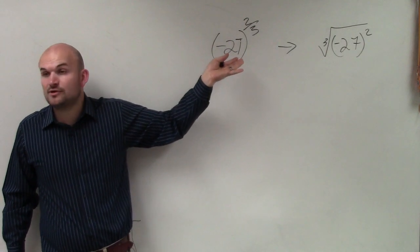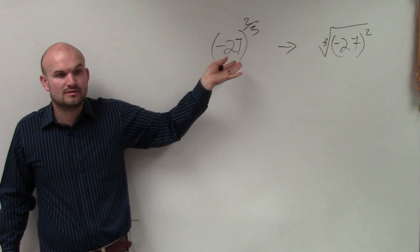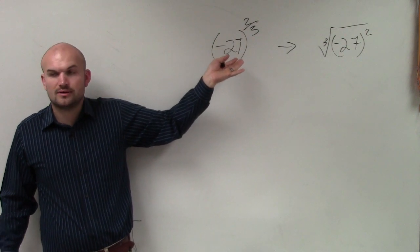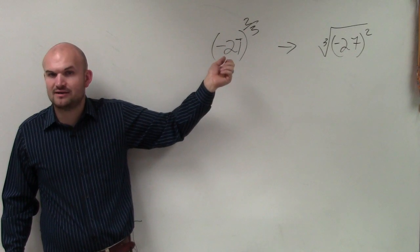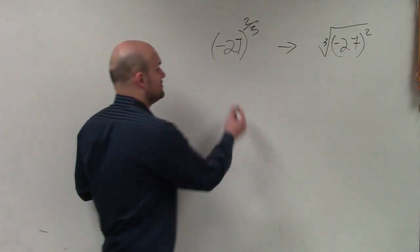Well, think about it. 2 to the third power, does that give you negative 27? Negative 2 to the third power? No. What about negative 3? Negative 3 times negative 3 times negative 3. Yeah, that does work.